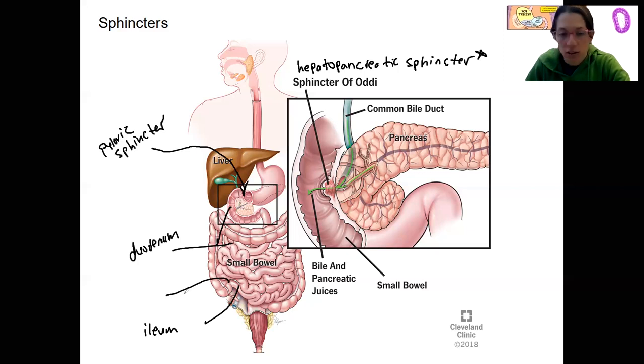So there's a sphincter right here called the ileocecal sphincter. The cecum is this large portion of the large intestine right here. This is the appendix hanging off there. So ileocecal valve sphincter is a pretty good name in terms of making sense.